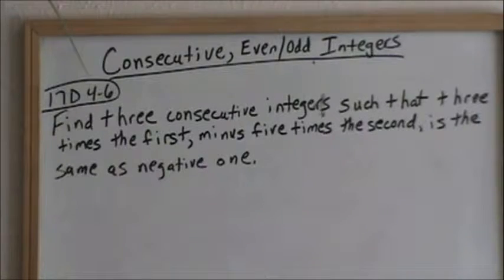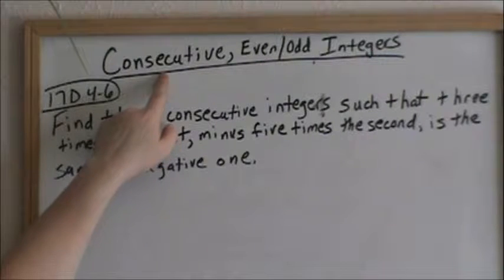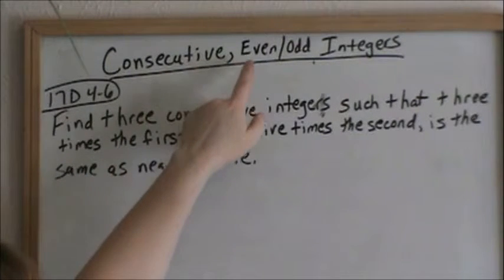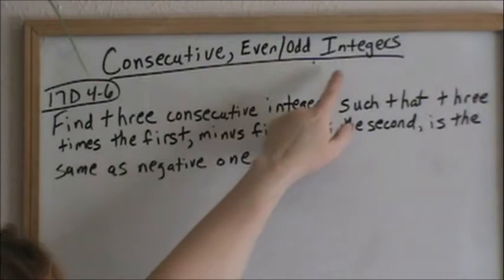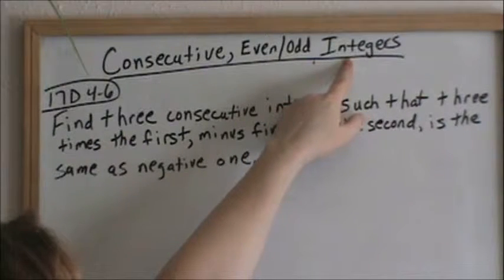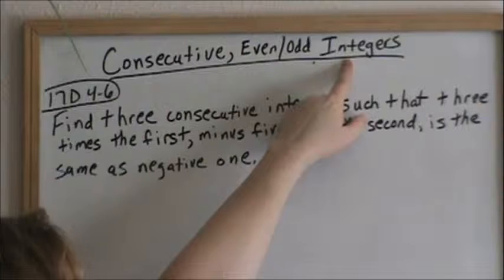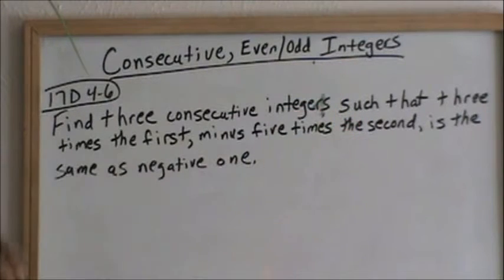We're going to be doing consecutive integers and consecutive even and odd integers. As a reminder, an integer is a whole number, not a decimal. It's a whole number, and it can be positive or negative.